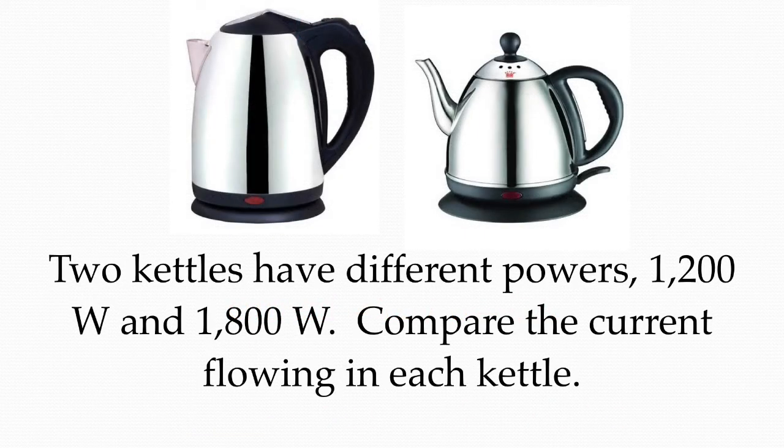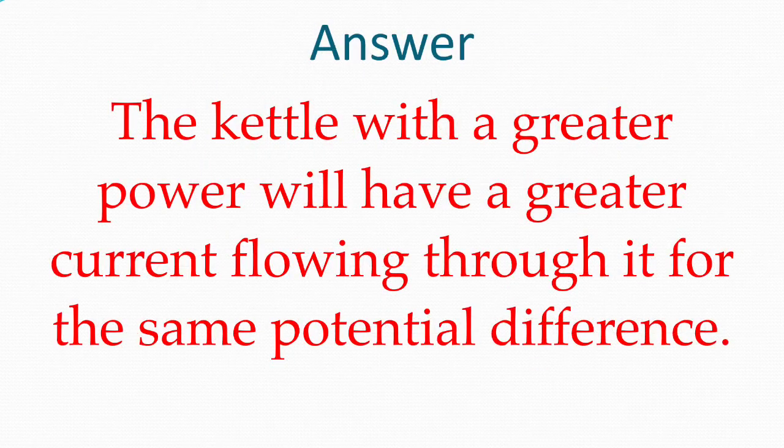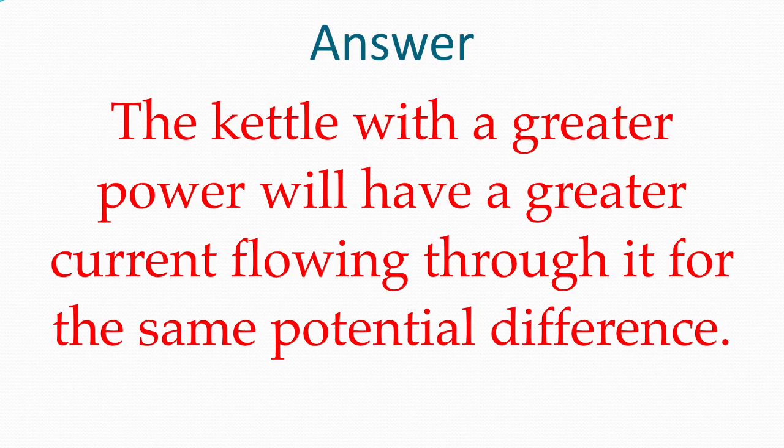Two kettles, one with a power of 1200 watts and the other with a power of 1800 watts. Compare the current flowing through each kettle. The kettle with the greater power will have a greater current flowing through it for the same potential difference.